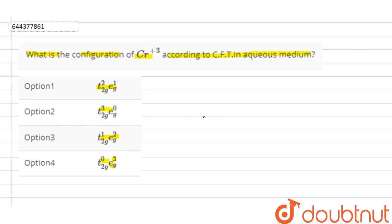Now, chromium plus 3 will undergo octahedral formation.